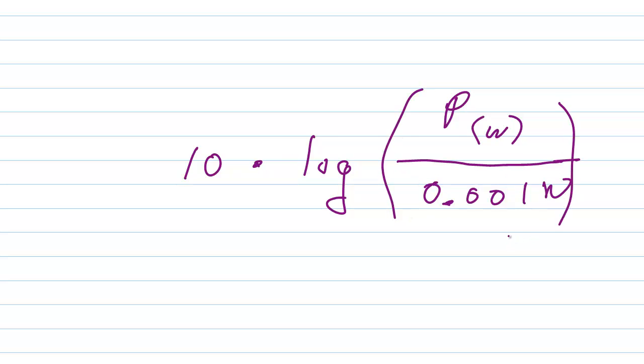That will give you dBm. Decibels with respect to one milliwatt is ten times the logarithm of whatever power you have divided by one milliwatt.